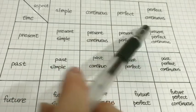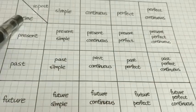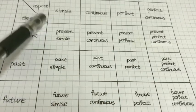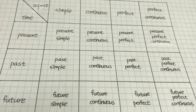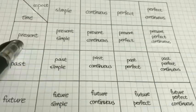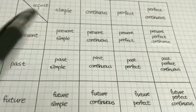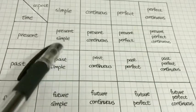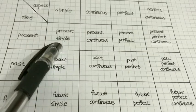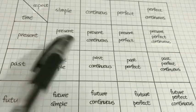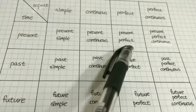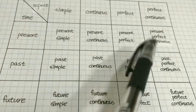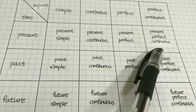So, the times and the aspects combine to make the 12 tenses in English. The present time and the simple aspect make the present simple. We also have present continuous, present perfect, and present perfect continuous.